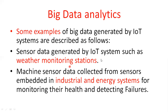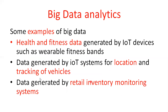For example, a weather monitoring station — sensor data generated by the IoT system such as a weather monitoring station. Another example is industrial energy systems, where machine sensor data is collected from sensors embedded in an industrial energy system for monitoring health and detecting failures. Other examples include health and fitness data.